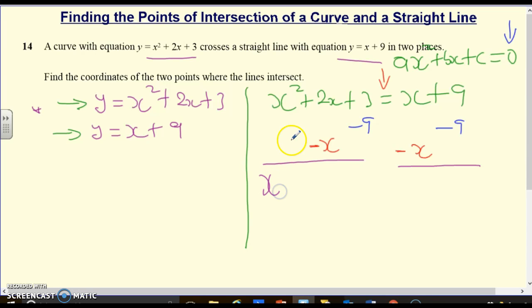x squared, obviously, would come down with no changes. And then, we have 2x take away x. We have our positive 3 take away 9. And this now would equal 0.